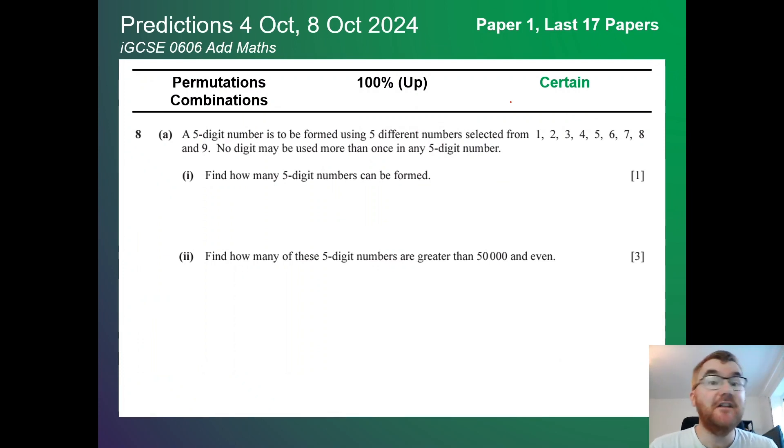Hello and welcome to another Ginger Math Prediction video. So today we are predicting the IGCSE 0606 AdMaths exams coming up very soon on the 4th October and the 8th of October.